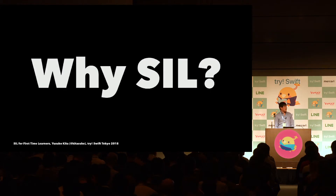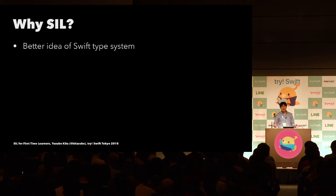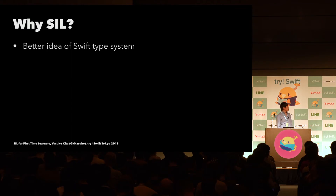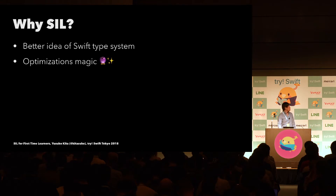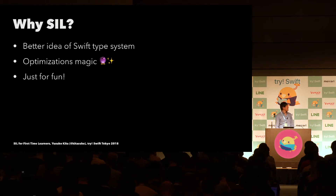Maybe the first thing that comes to your mind is why we need to learn SIL. I think there are a few reasons. First, Swift is awesome — it has so many features like protocols, generics, optionals, and so on. Learning SIL is a great approach to understand how the Swift compiler works and the Swift type system as well. Second, there are tons of optimizations running in this phase, so if you're curious about optimizations, this is the right spot. And finally, it's just so much fun to me — and I think that's enough reason to learn the basic stuff at the beginning.